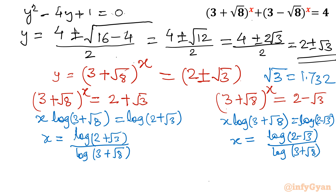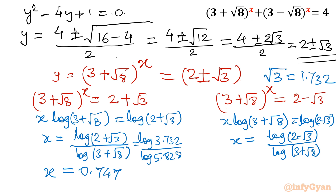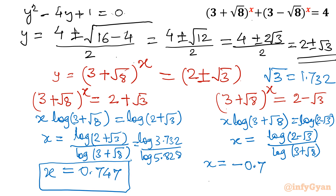We know √3 ≈ 1.732, so (2 + √3) ≈ 3.732 and (3 + √8) ≈ 3 + 2.828 = 5.828. Evaluating: log(3.732) / log(5.828) ≈ 0.5719 / 0.7655 ≈ 0.747. For the second equation, simplifying gives x ≈ -0.747.